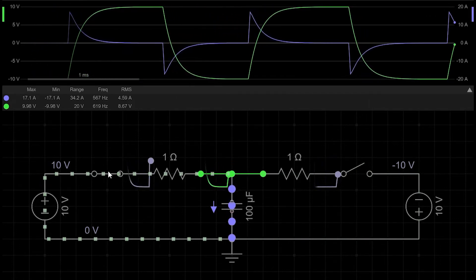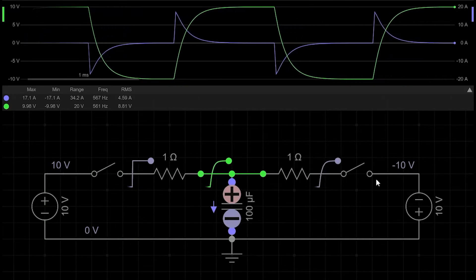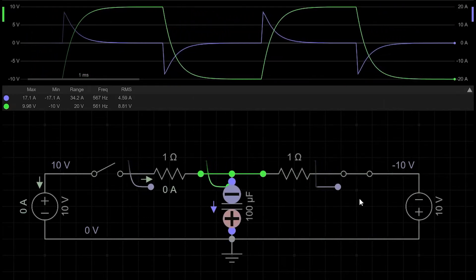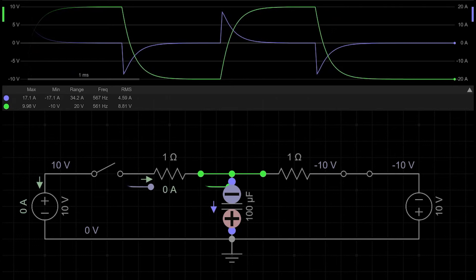When you apply DC, charges just sit on one plate and that's it. The dielectric blocks their movement. But when you apply AC, charge between plates move in different directions.